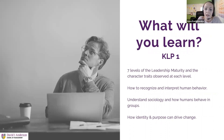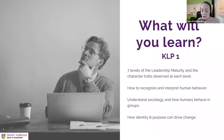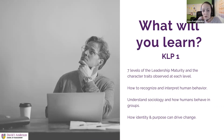In KLP Part 1 you will look closely at the seven levels of leadership maturity and the character traits observed at each level, to better understand where you are as a leader and how to work with others depending on their leadership maturity. You'll also learn how to recognize and interpret human behavior, including sociology — how humans behave in groups — and how identity and purpose of individuals or groups can drive change.